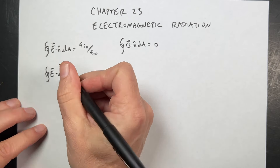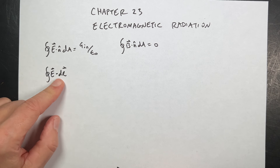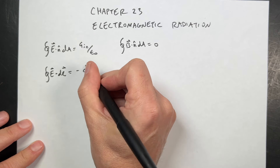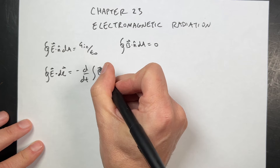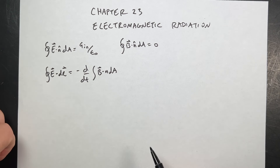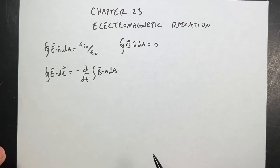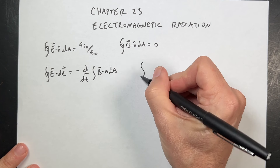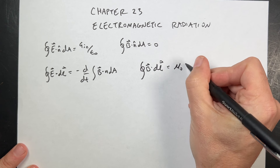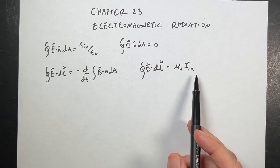Then we have Faraday's law: the line integral of E dot dl around some closed path — which we could call the EMF — should be zero for a static field, but it's not because it equals negative the time derivative of the magnetic flux. So these two together say there are two ways to make electric fields: with charge or with a changing magnetic flux. And then Ampere's law: the path integral of B dot dl equals mu-naught times I_enclosed.